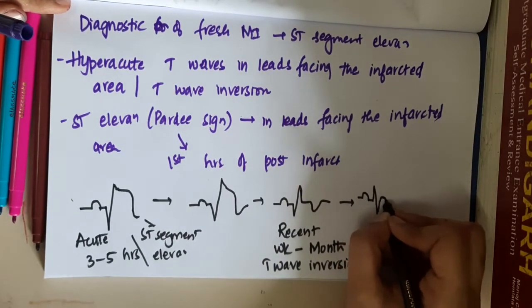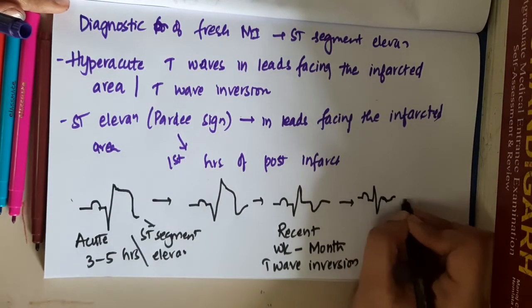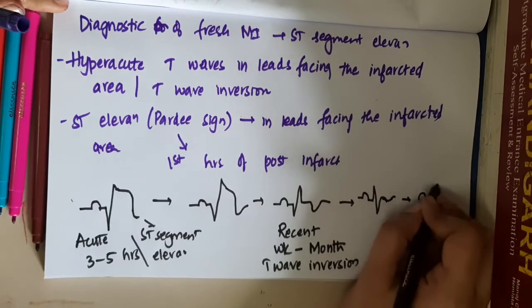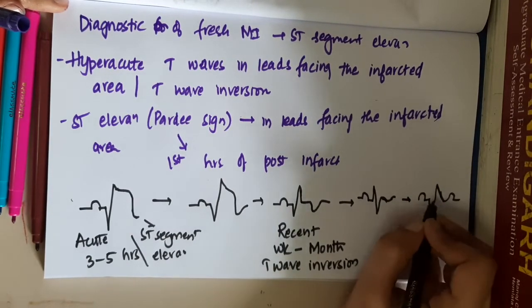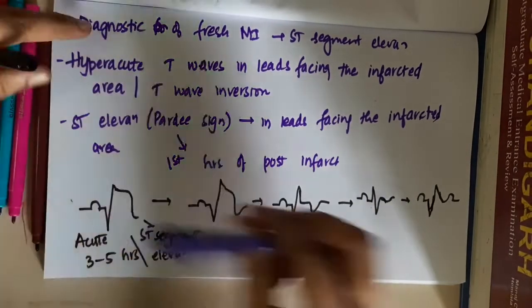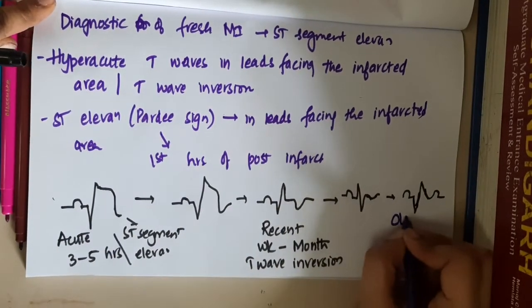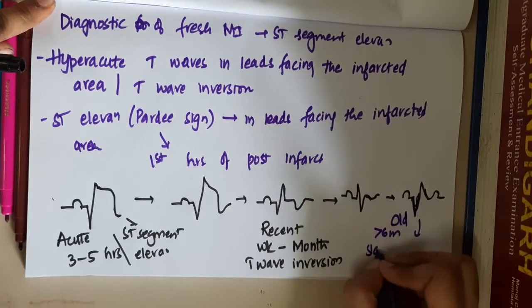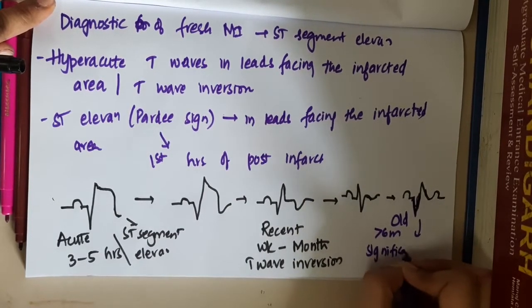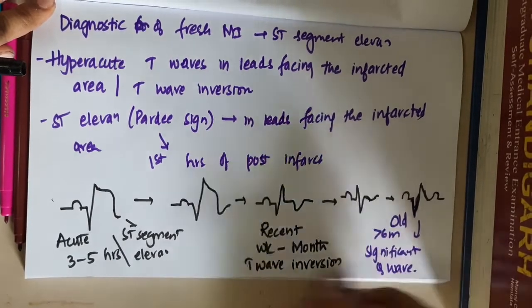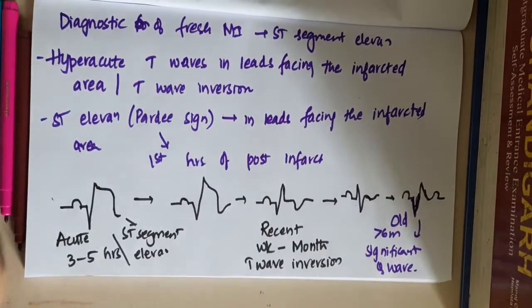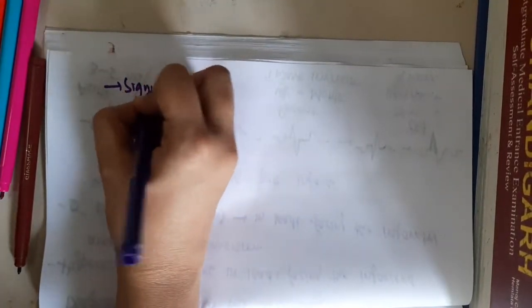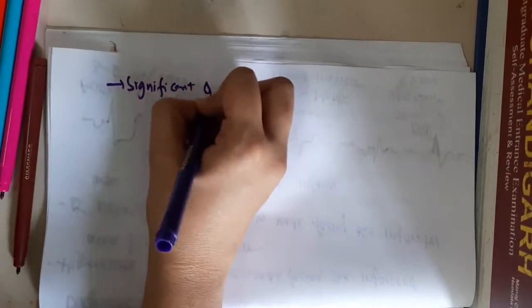Slowly the T wave inversion will also decrease. Finally, in old MI — that is more than 6 months — you will see a significant Q wave. These significant Q waves appear hours to days post impact.